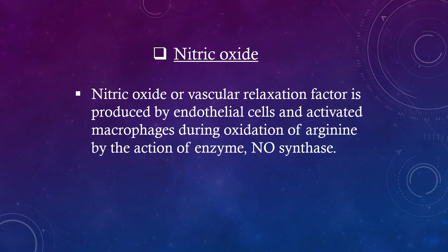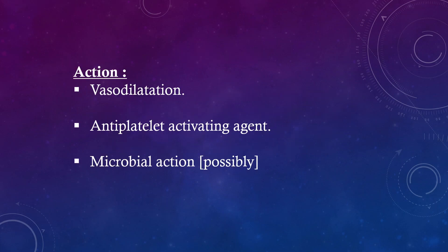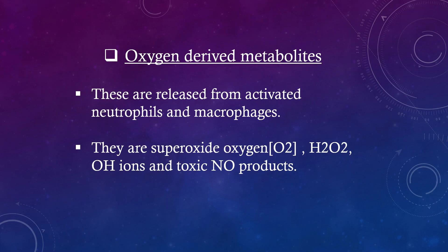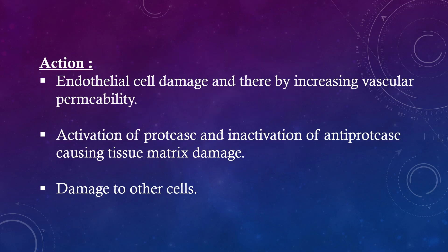Nitric oxide. Nitric oxide, or vascular relaxation factor, is produced by endothelial cells and activated macrophages during oxidation of arginine by the action of nitric oxide synthase. Actions: vasodilatation, anti-platelet activating agent, and possible microbial action. Oxygen-derived metabolites. These are released from activated neutrophils and macrophages. They include superoxide (O2-), H2O2, OH ions, and toxic nitrogen products. Actions: endothelial cell damage thereby increasing vascular permeability, activation of proteases and inactivation of anti-proteases causing tissue matrix damage, and damage to other cells.